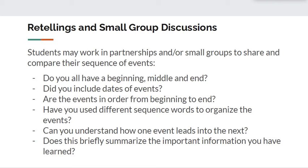Retellings and small group discussions. Students may work in partnerships and small groups to share and compare their sequence of events. Do you all have a beginning, middle, and end? Did you include dates of events? Are the events in order from beginning to end? Have you used different sequence words to organize the events? Can you understand how one event leads into the next?